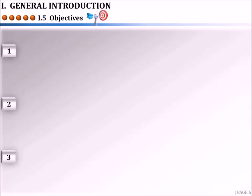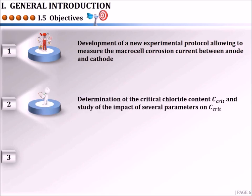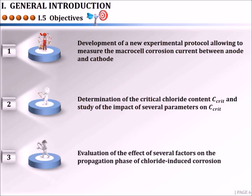All these observations led to the following objectives. Firstly, it was important to develop a new experimental protocol allowing to measure the macrocell corrosion current between anode and cathode. Secondly, it was necessary to use this protocol to determine the critical chloride content initiating corrosion and to study the impact of several parameters on Ccrit. Finally, given the importance of including corrosion propagation in the service life of the structure, it was important to evaluate the effect of several factors on the corrosion propagation phase.